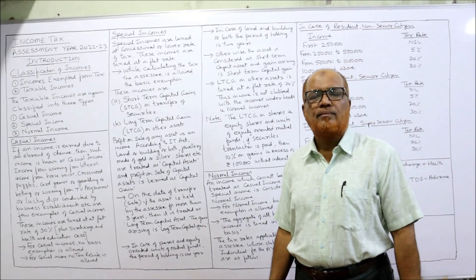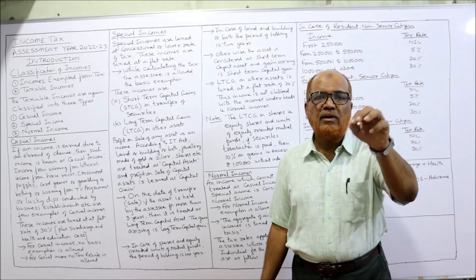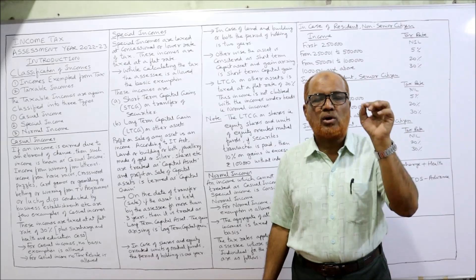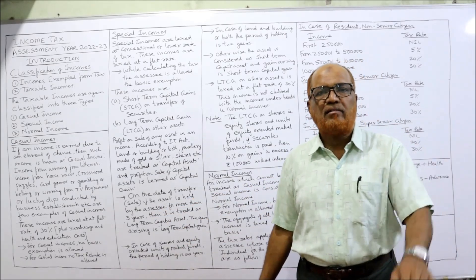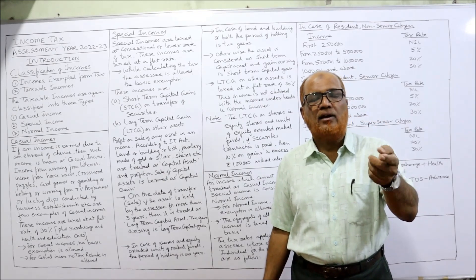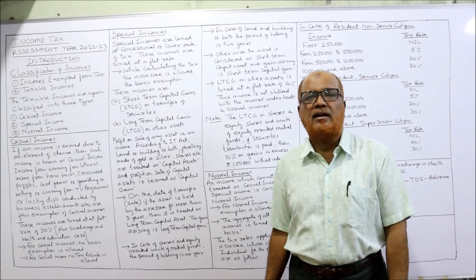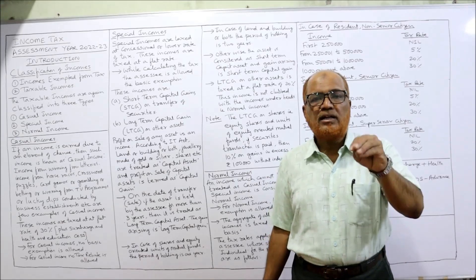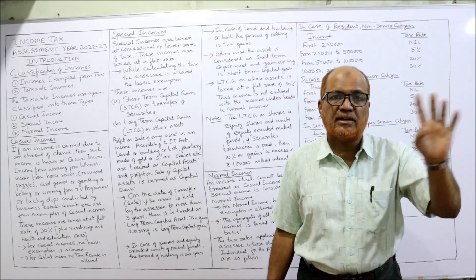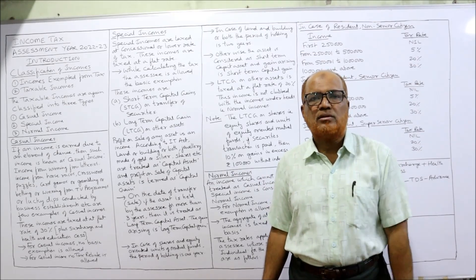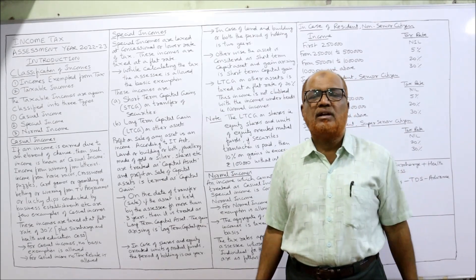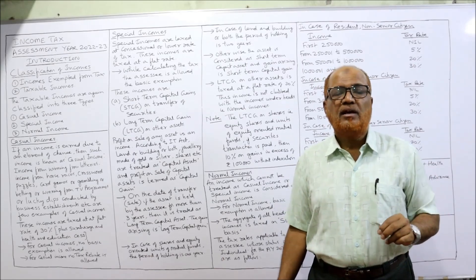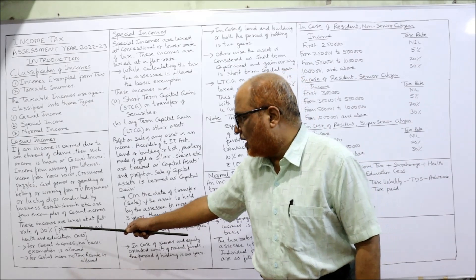Casual incomes are taxed at a flat rate of 30%. They are not clubbed with any other income — they must be kept separate. On top of 30%, surcharge (if applicable) and health and education cess are added. For example, if a person wins a lottery prize of 1 lakh rupees, 30% tax is 30,000 rupees, leaving only 70,000 rupees after tax, plus cess.